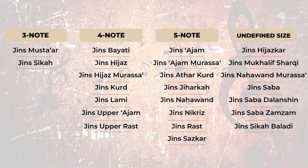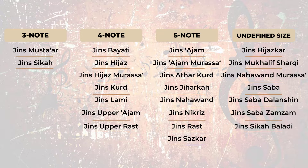Here are some popular ajnas: Jins Mustar, Jins Sigha, Jins Bayati, Jins Hijaz, Jins Hijaz Murasa, Jins Kurd, Jins Lami, Jins Upper Ajam, Jins Ajam, Jins Ajam Murasa, Jins Athar Kurd, Jins Jiharka, Jins Nahawant, Jins Nikris, Jins Rast, Jins Saskar, Jins Hijazkar, Jins Mohalif Sharki, Jins Nahaawant Murasa, Jins Sabah, Jins Sabah Dalanshin, Jins Sabah Zamzam, Jins Sighab Baladi.